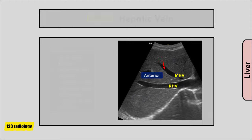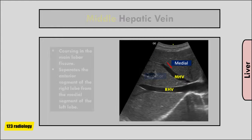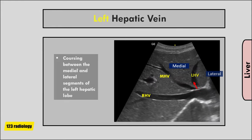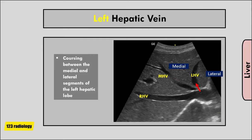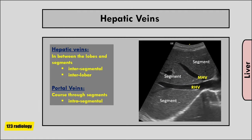The middle hepatic vein courses within the main lobar fissure and separates the anterior segment of the right lobe from the medial segment of the left lobe. The left hepatic vein courses between the medial and lateral segments of the left hepatic lobe in the left intersegmental fissure. So, the hepatic veins separate the hepatic segments — they are intersegmental and interlobar.